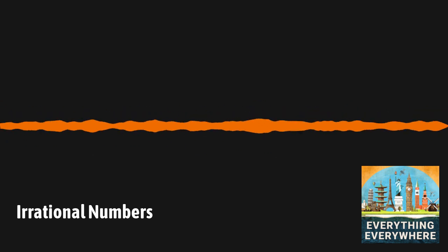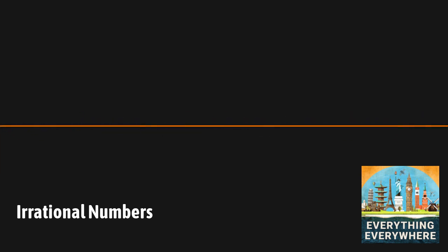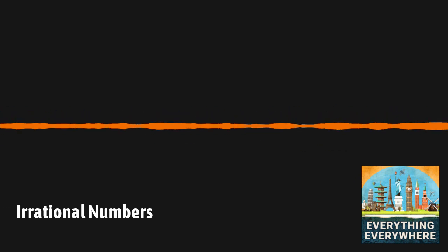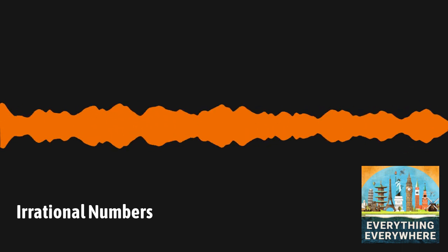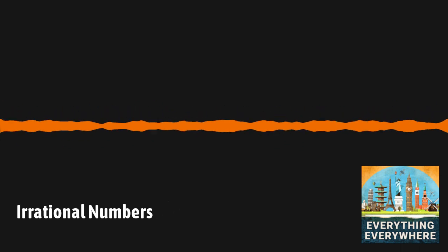An irrational number, when written in decimal expansion, is infinitely long and never repeats its digits. The most common irrational number, and the first one which was probably ever discovered, was the square root of two. There are no numbers that you can divide into each other to equal the square root of two.